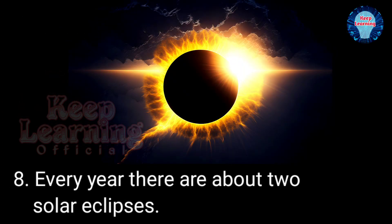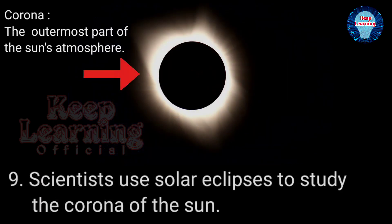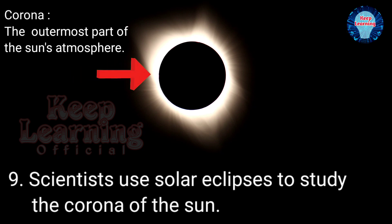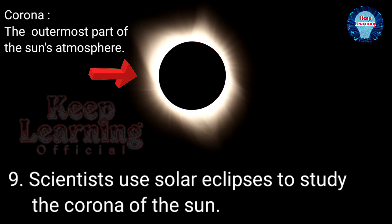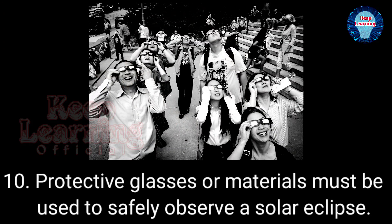Every year there are about two solar eclipses. Scientists use solar eclipses to study the corona of the sun. Protective glasses or materials must be used to safely observe a solar eclipse.